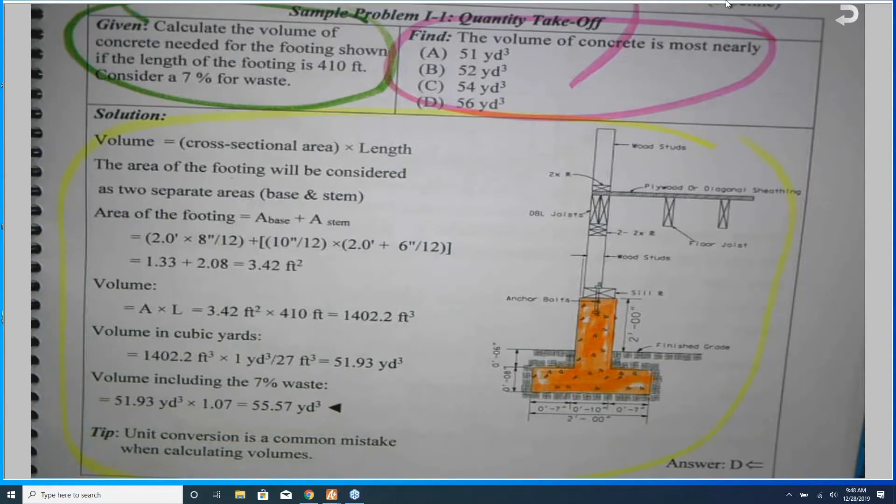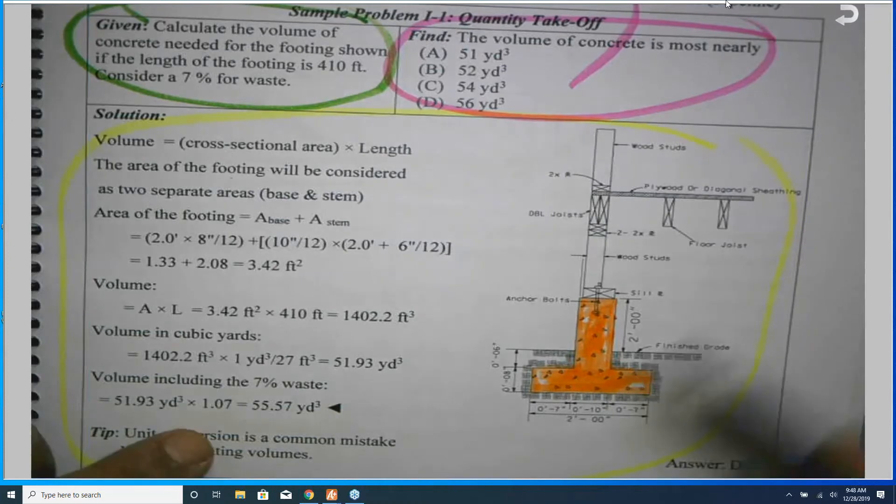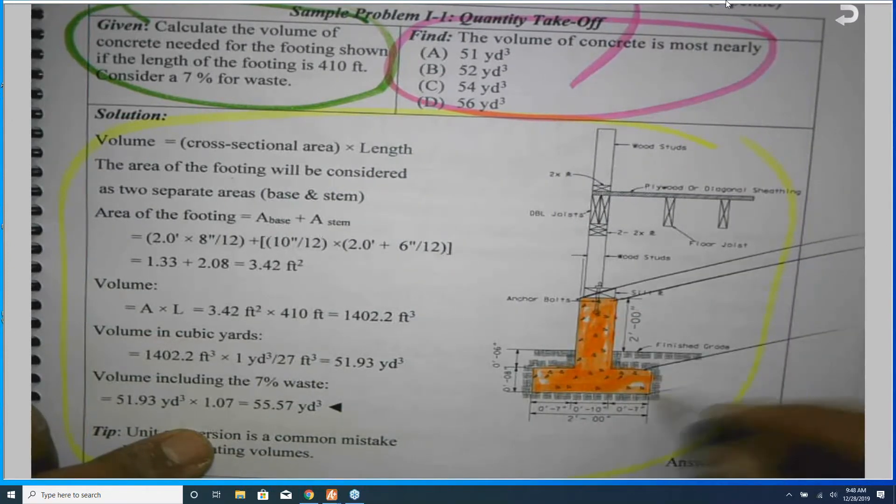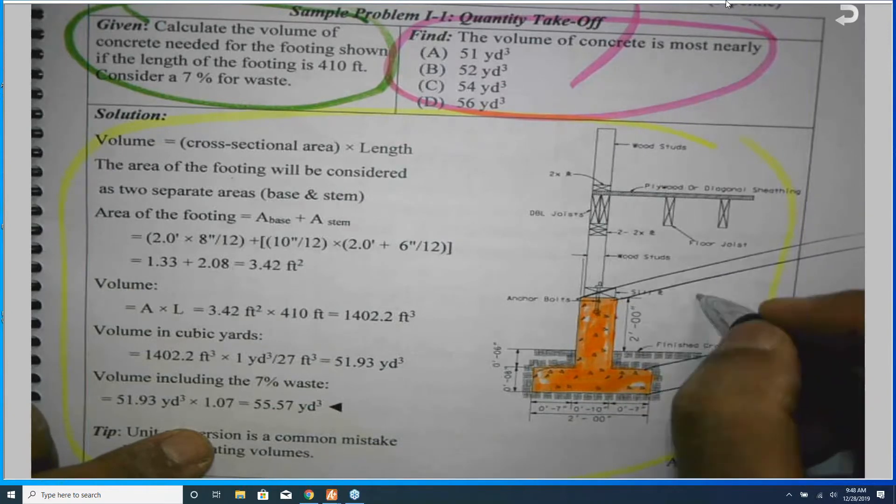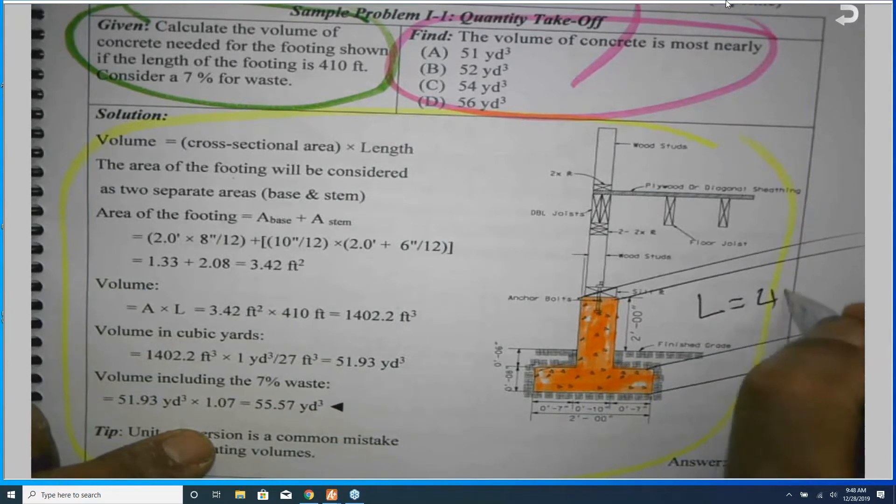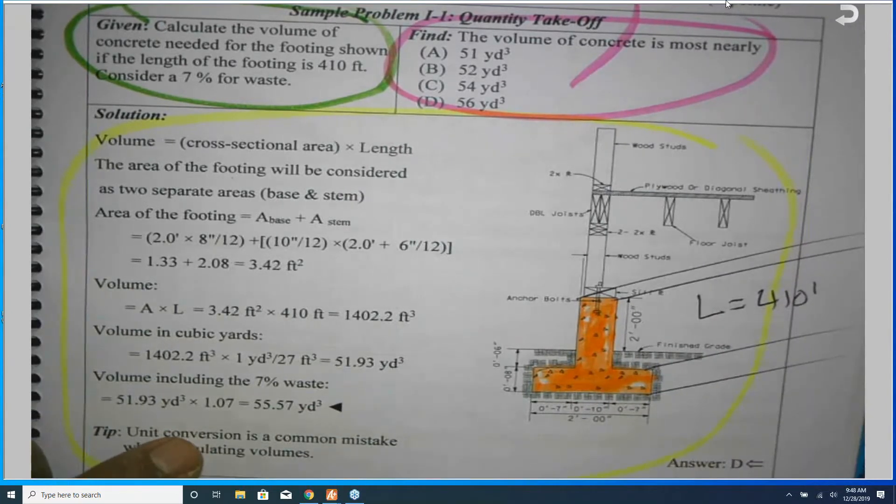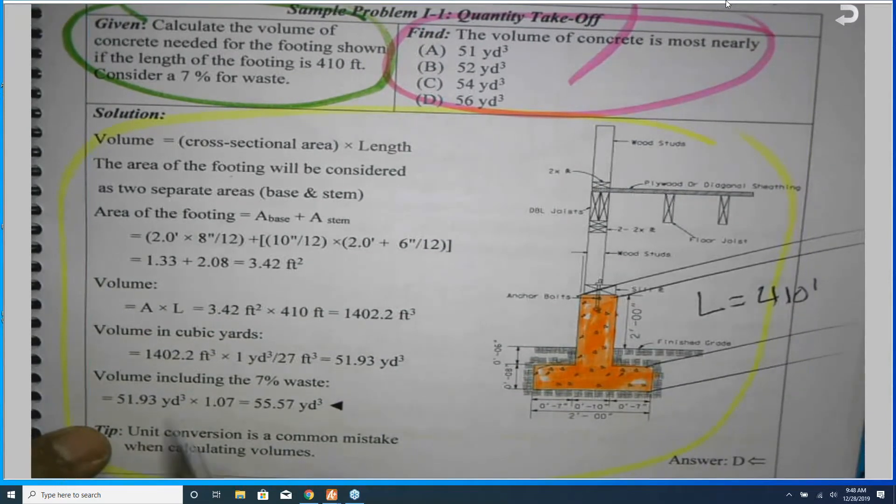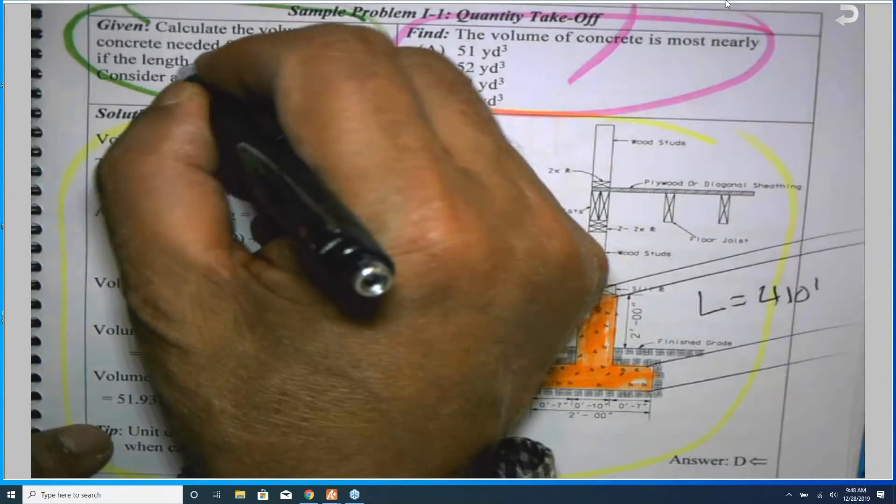This footing has a length that extends this way. For how long? L equals 410 feet. And he is asking, what is the volume, taking into consideration 7% waste?